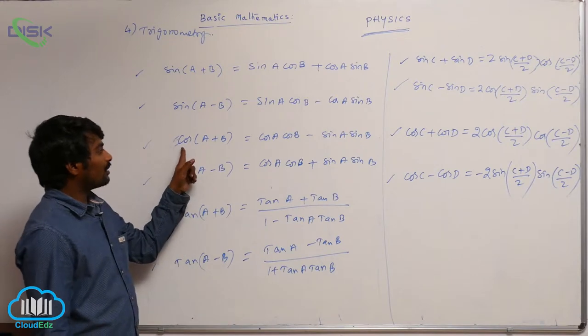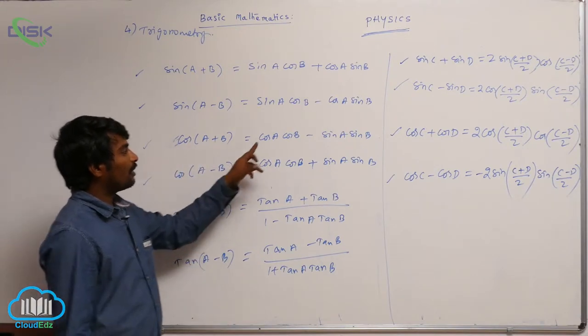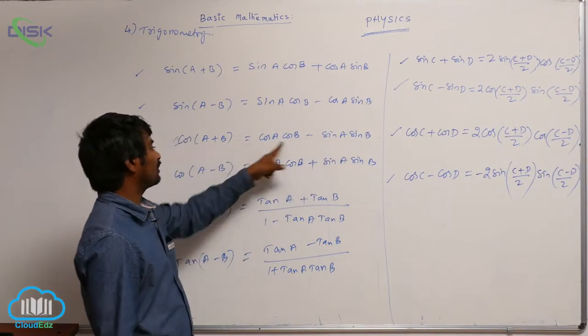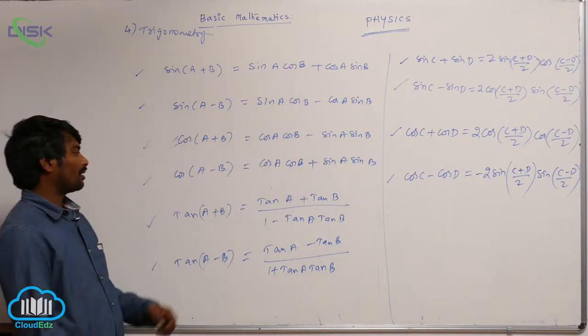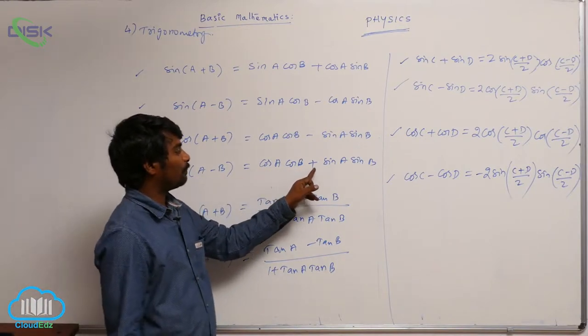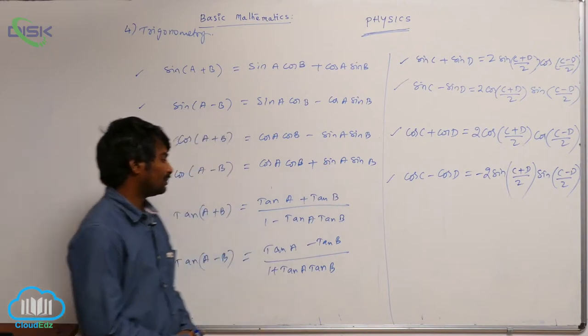cos(a + b) = cos a cos b - sin a sin b. Here plus, here minus we are getting. cos(a - b) = cos a cos b + sin a sin b.